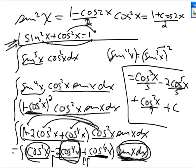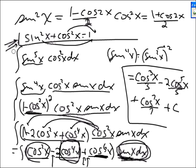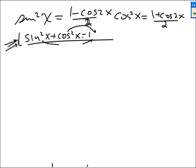I broke off just one sine x and everything else had cosine x's in it. This is a technique you have to have: break off either a sine x or a cosine x — that will be your du. Sine x dx or cosine x dx — that's going to be your du.